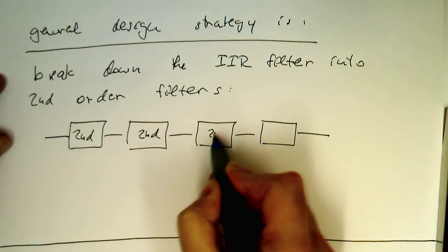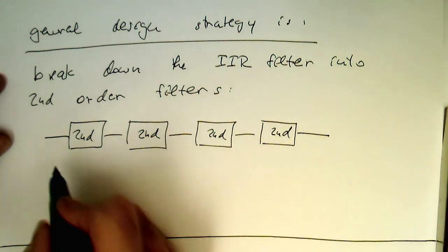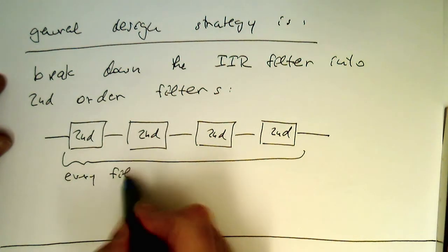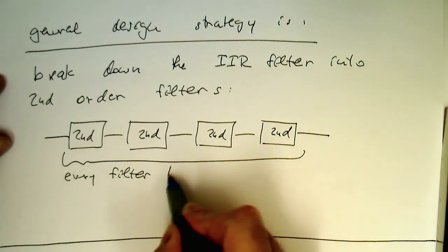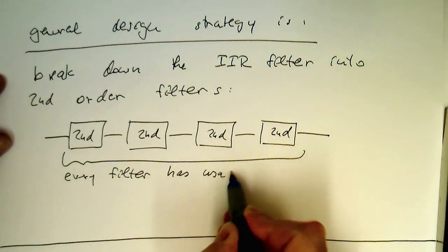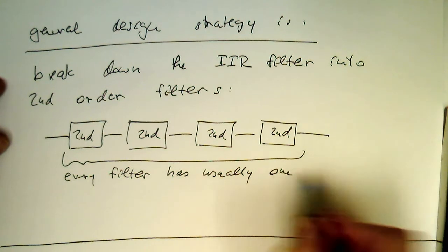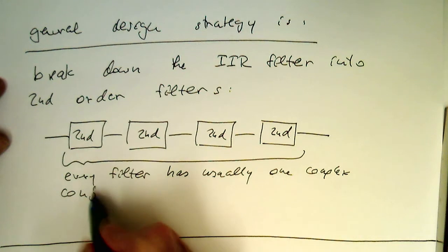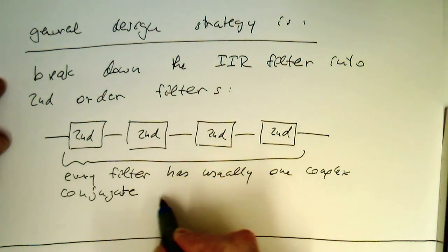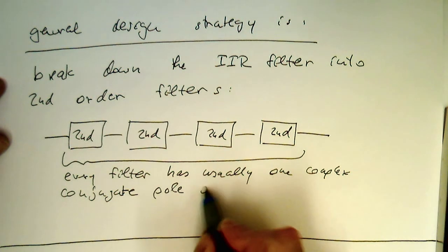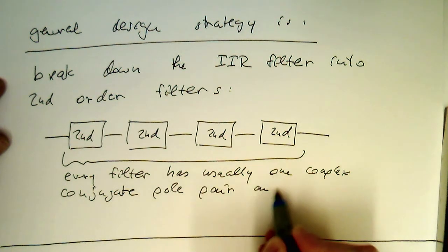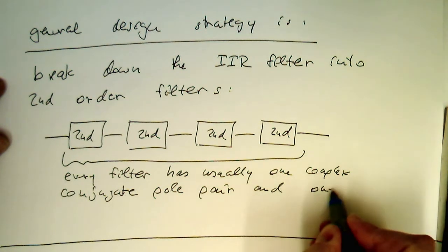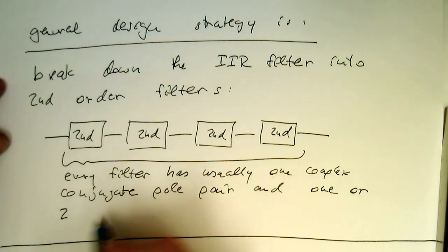Second-order filters, and so every filter here has usually one complex conjugate pole pair and one or two zeros.